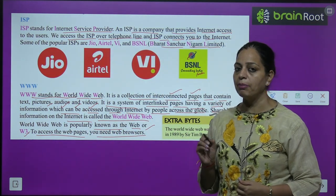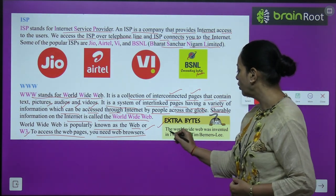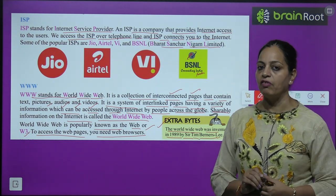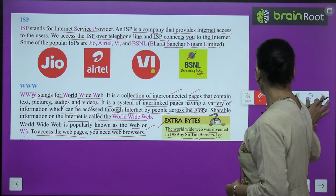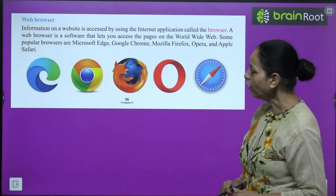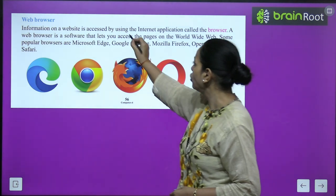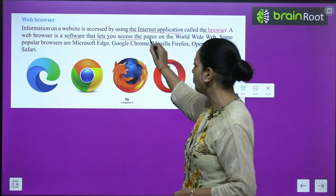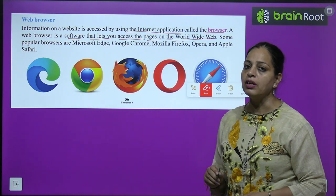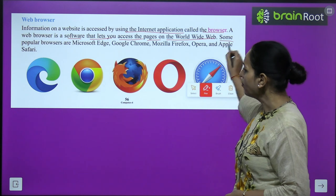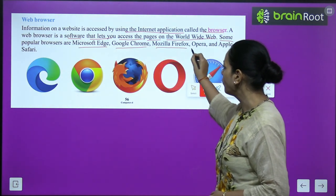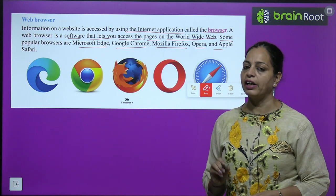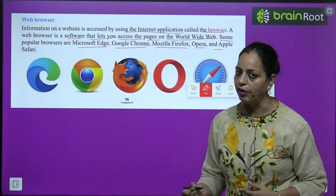Extra byte: the World Wide Web was invented in 1989 by Sir Tim Berners-Lee. A web browser is a software that lets you access the pages on the World Wide Web. With the help of a web browser, we can collect information. Some popular browsers are Microsoft Edge, Google Chrome, Mozilla Firefox, Opera, and Apple Safari.